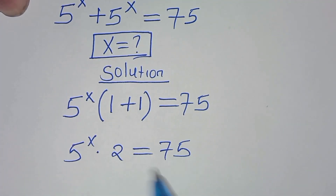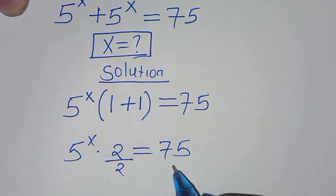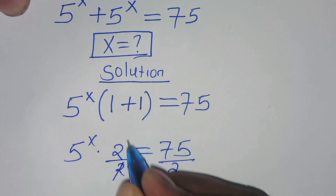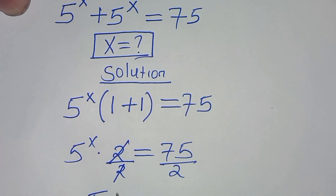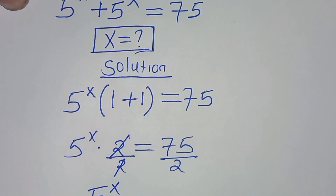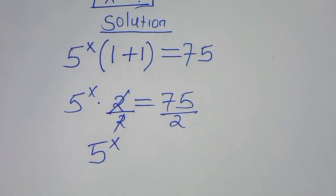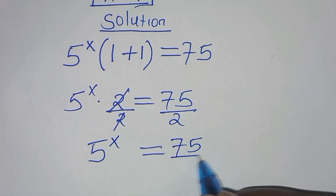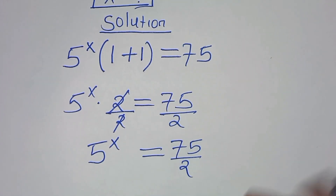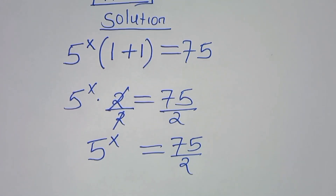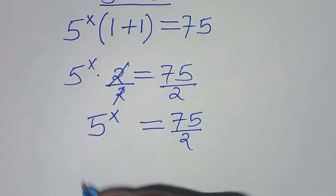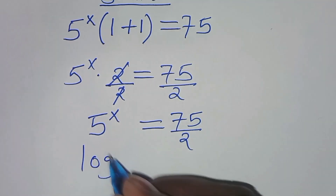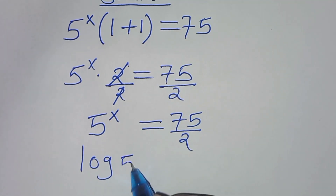So we have 5^x times 2 equals 75. Let's divide both sides by 2, so now we have 5 to the power x equals 75 over 2.